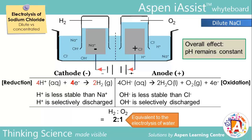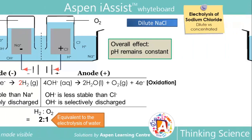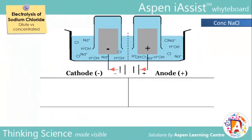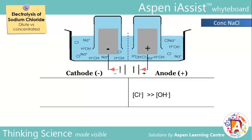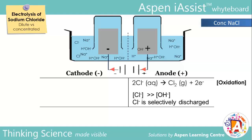Let's now move on to the electrolysis of concentrated sodium chloride solution, which is also known as brine. Similar to the electrolysis of dilute sodium chloride solution, the electrodes are platinum rods. Note that the concentration of Na⁺ and Cl⁻ ions are now much higher than before. At the anode, even though hydroxide ions are less stable than chloride ions, the chloride ions have a greater tendency to discharge over the hydroxide ions due to their high concentration in the solution. Thus, the chloride ions are selectively discharged over the hydroxide ions.